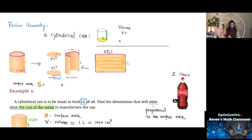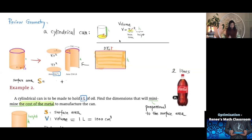First, let's review some geometry. For a cylindrical can with radius equal to r and height equal to h, the volume is V = π r² h. π r² is the base area, and h is the height.